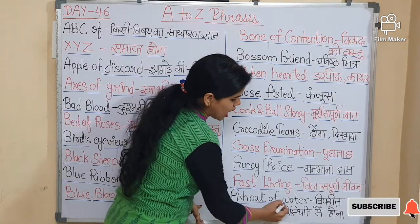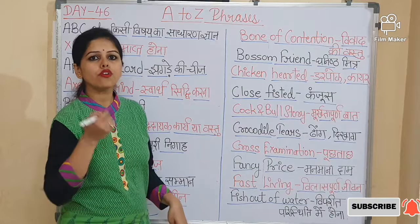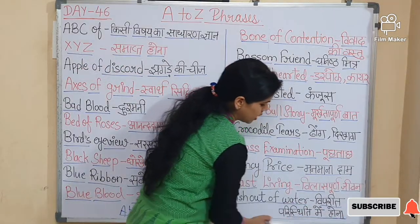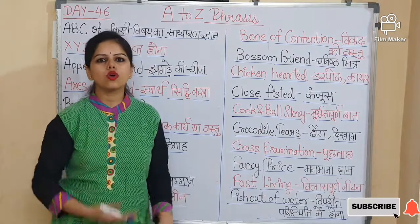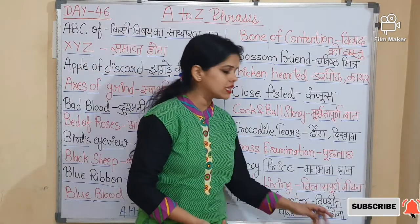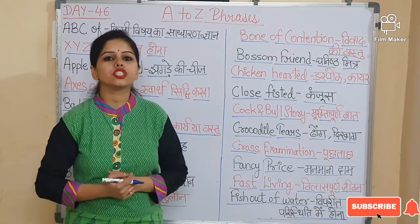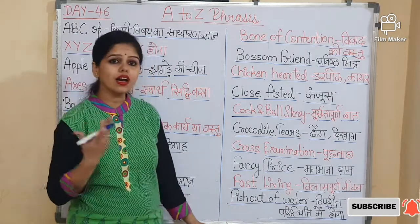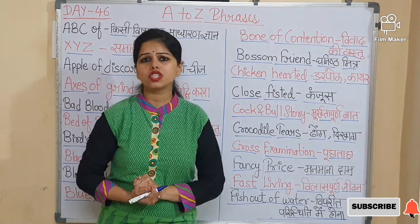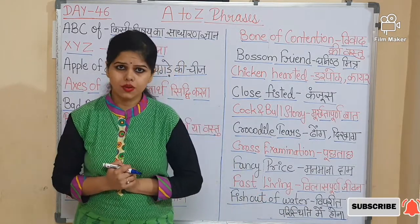Next is 'Fish out of water'. Fish out of water means vipreet paristhiti mein hona — to be in an uncomfortable or unfamiliar situation. The sentence is: Our new English teacher is looking like a fish out of water because she is not aware of the class.